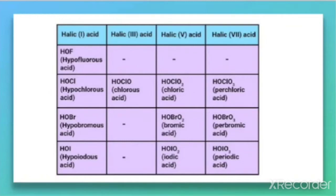For halic-1 acid, the names are: hypofluorous acid (HOF), hypochlorous acid, hypobromous acid, and hypoiodous acid. You can see the similarity in names and formulas across the halogens. For halic-3 acid, only chlorine can form this type, which is called chlorous acid with the formula HOClO.